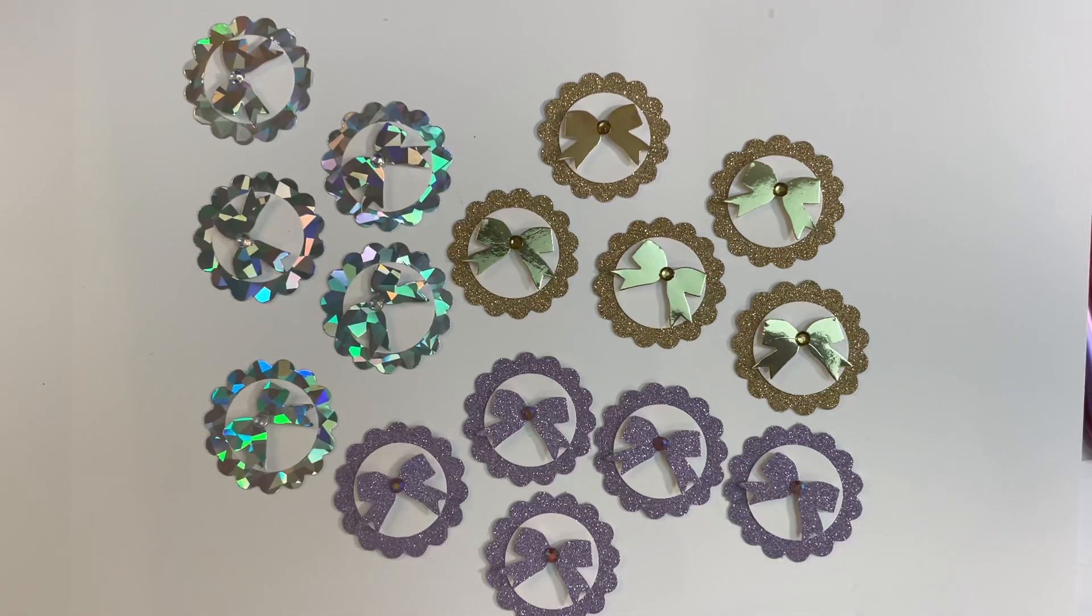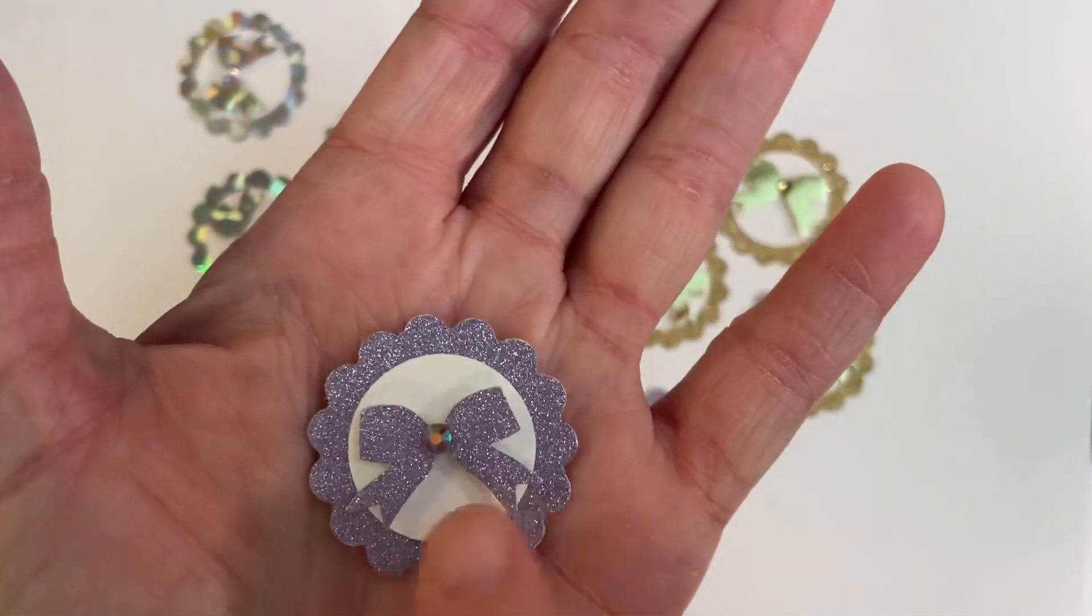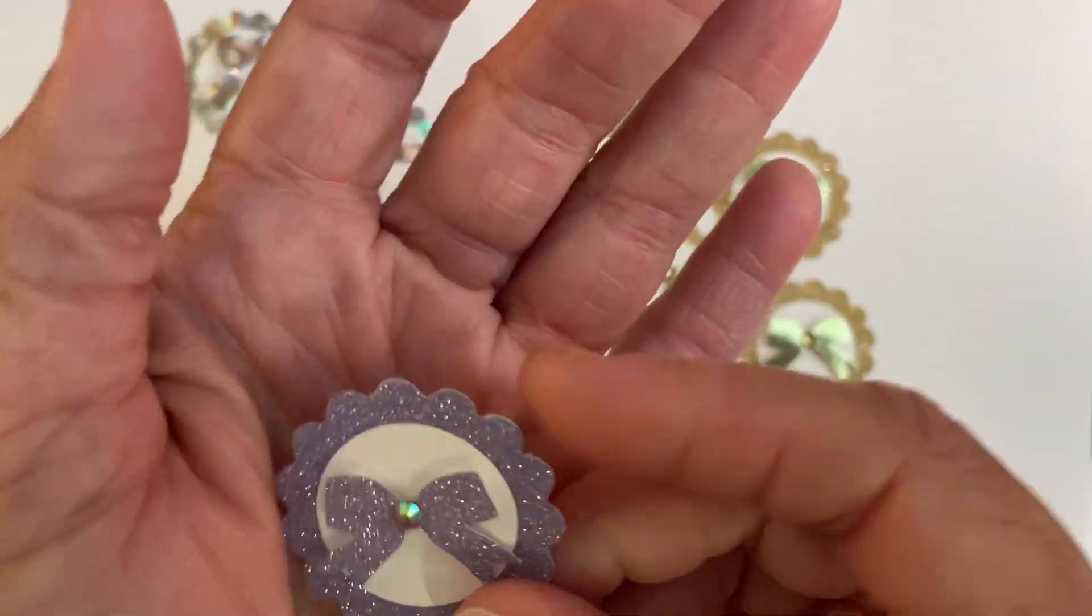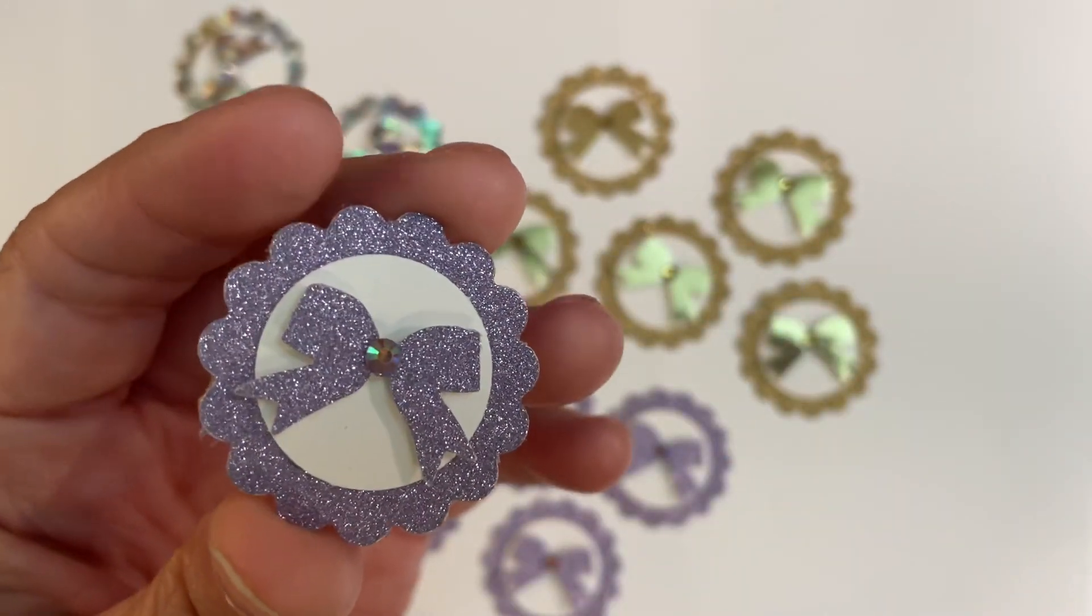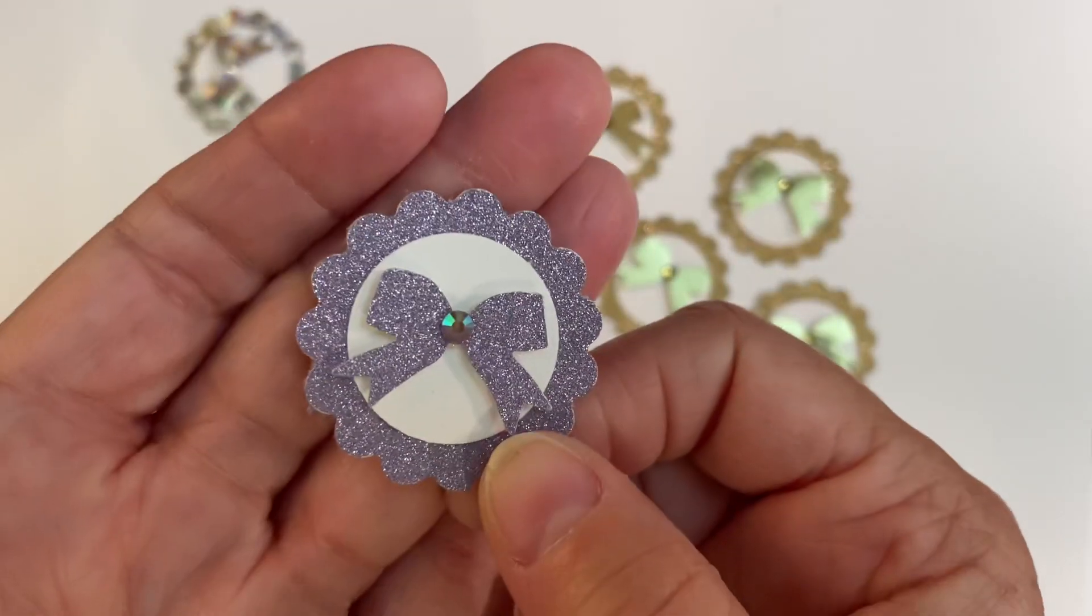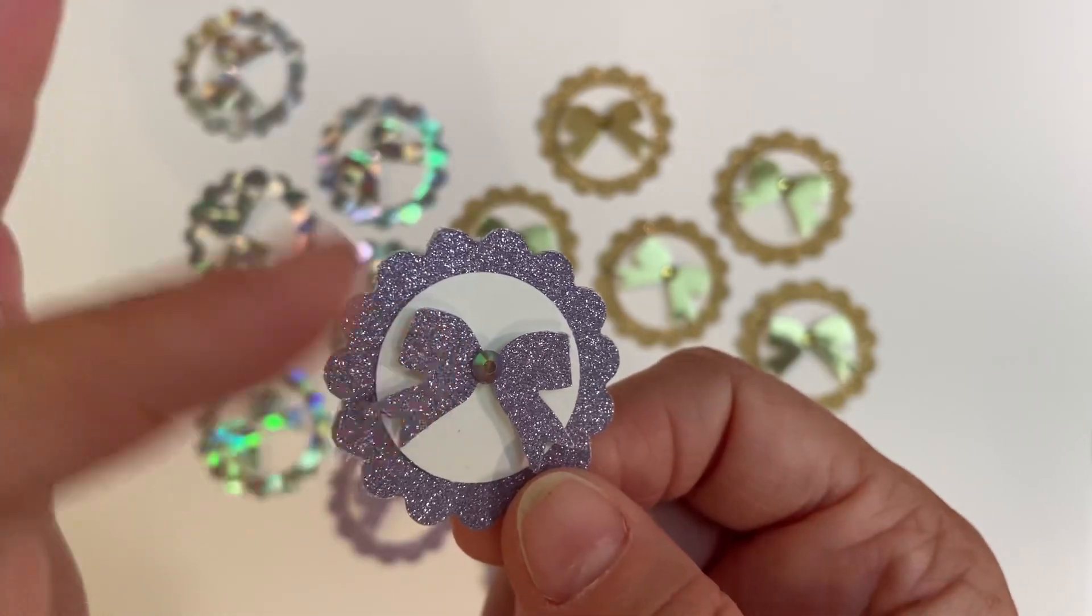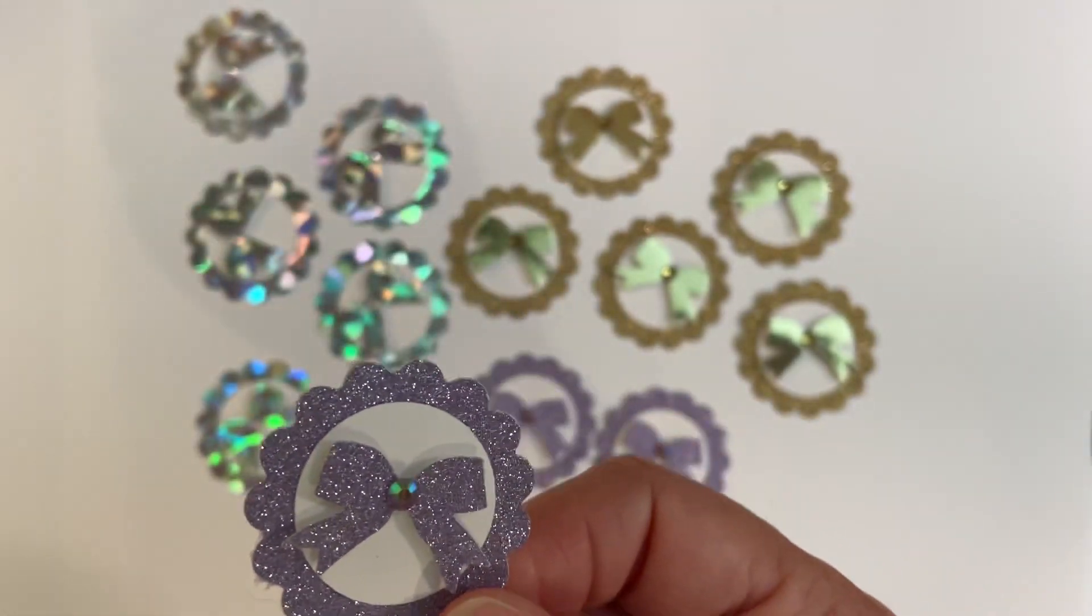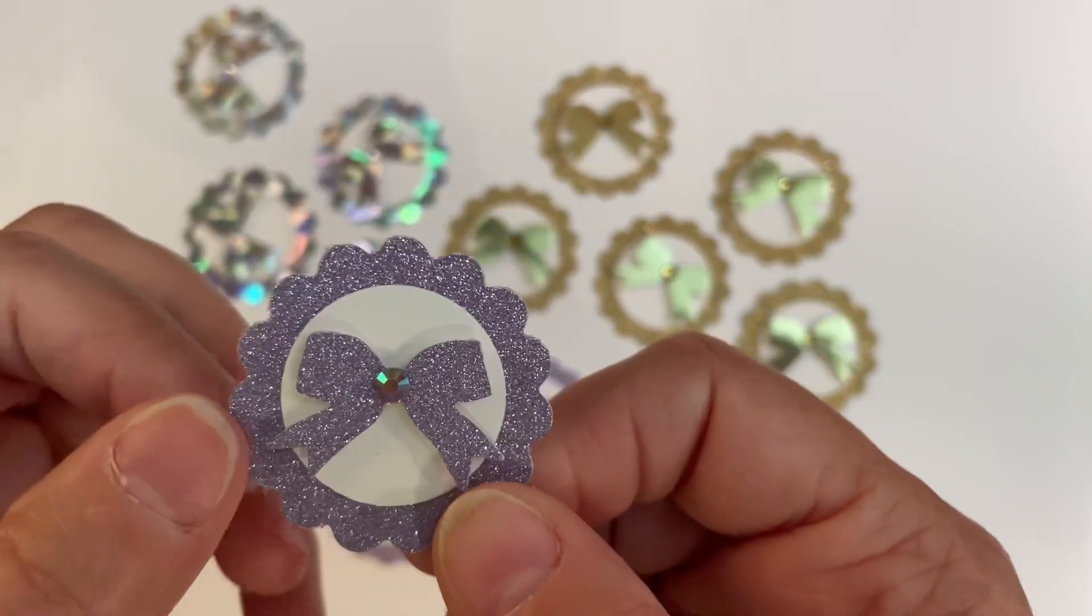I was going to do the little bows with gems in the middle of them. Then I decided I didn't really want just the bow by itself, so I decided I'd put them on little bases. I took my scalloped punch and the one-inch circle punch and just made these little bases.